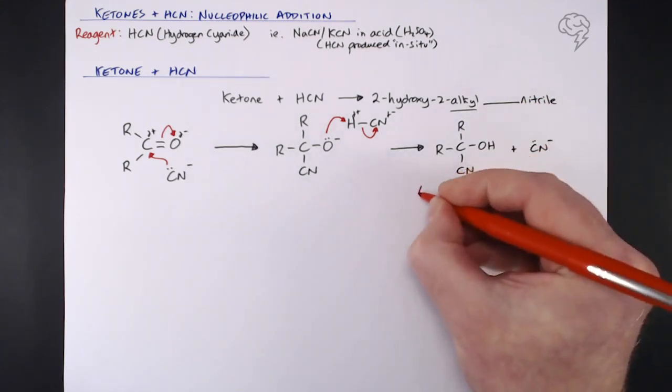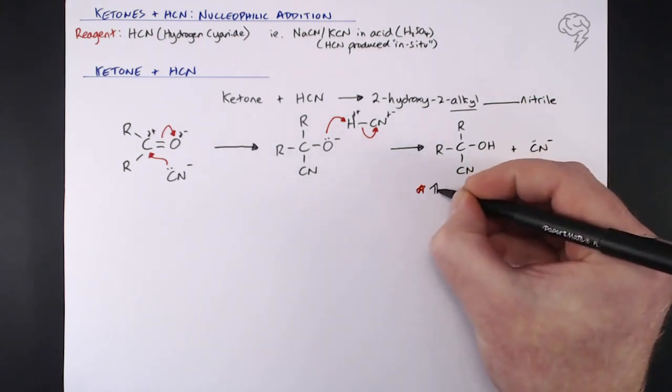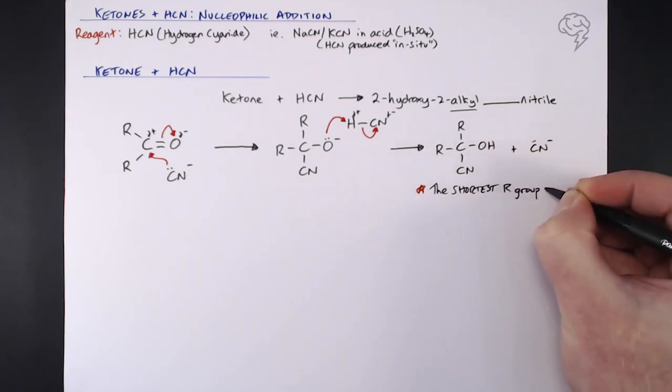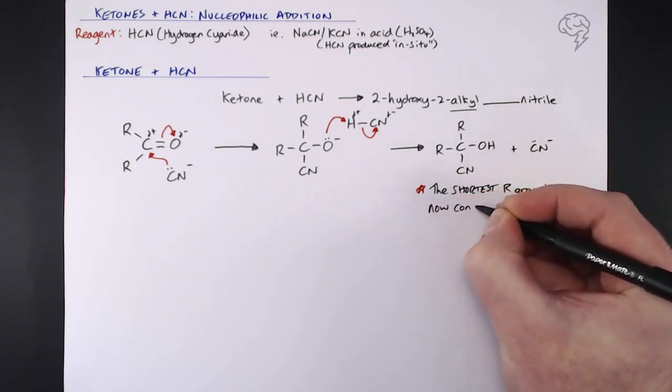This is why they're different from aldehydes: we get a side group. That shortest R group is now considered an alkyl side chain.